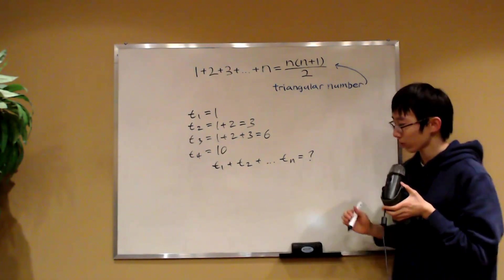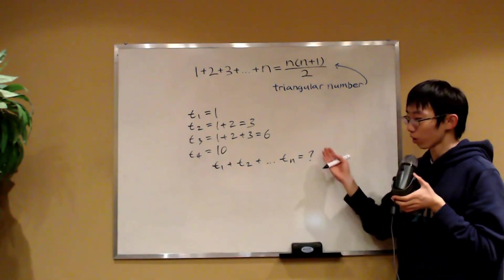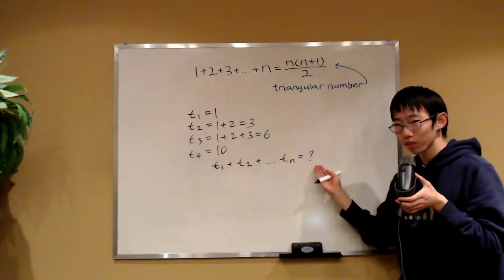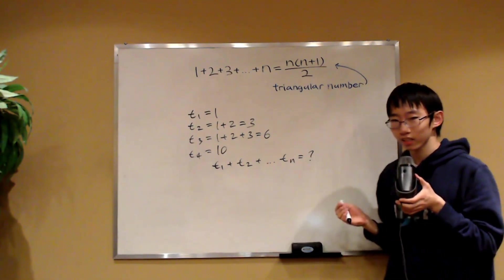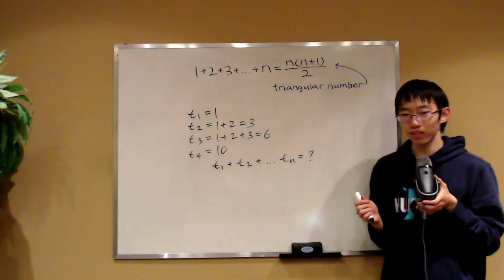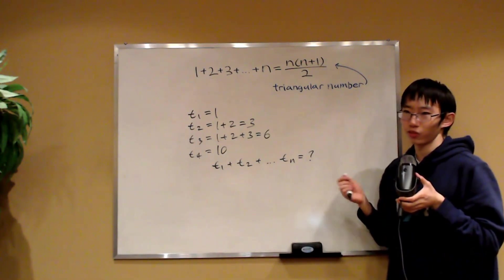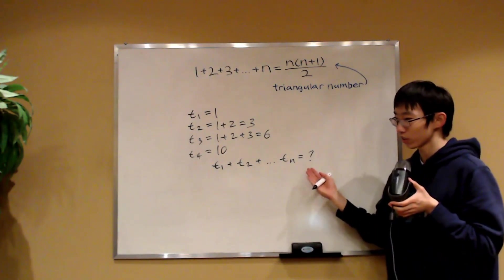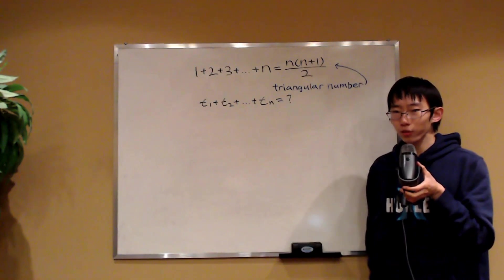Now, for instance, if I gave you the sum of the first 100 triangular numbers, how would you compute that? Well, as I said, it's a good idea to first see if we can derive a general formula for this in terms of n. Where do we even begin?